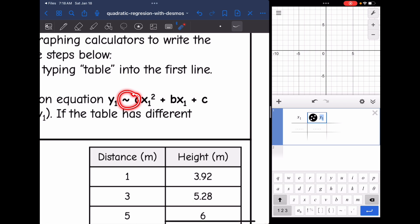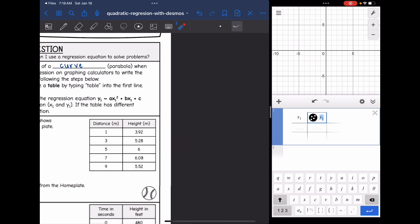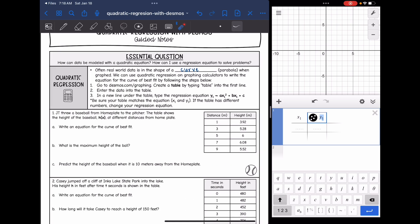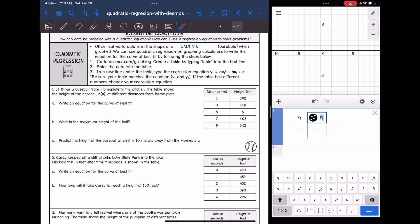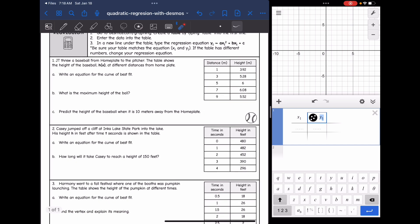And then we're going to use this symbol right here for the about symbol instead of an equal sign because it's not exact with a regression equation. It's the equation of best fit. Okay, so let's go ahead and take a look at number one, and we will practice that on number one.